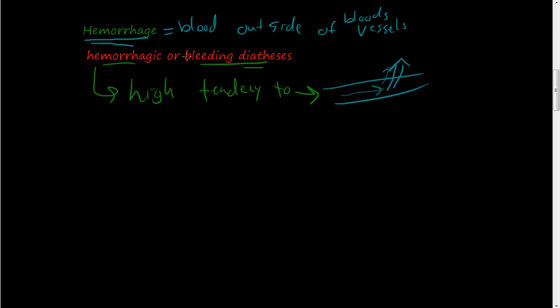And some of the causes of this hemorrhagic or bleeding diathesis are vitamin K problems, which are clotting factor problems. If you're on warfarin or blood thinner drugs, your blood's really thin so you can bleed really easy.